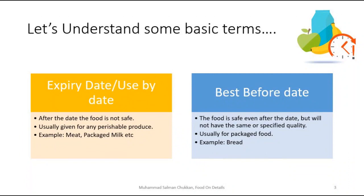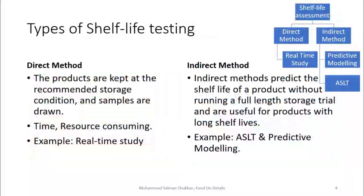Best before date is a date after which the food company is not assuring a specific quality of the product. It is usually given for packaged food products. A main example is bread. Now let's understand the types of shelf life testing, focusing only on the methods followed by the food industry.